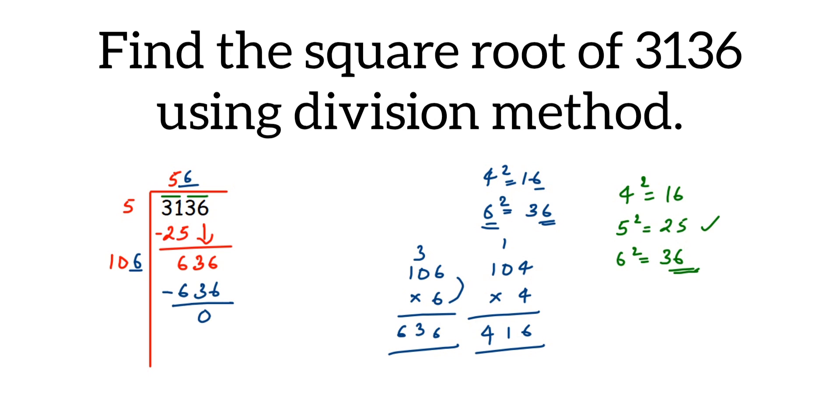We will subtract. We will get 0 as the remainder. So square root of 3136 is equal to 56. The number we obtained in the quotient will be the square root of that number.